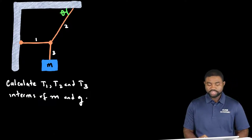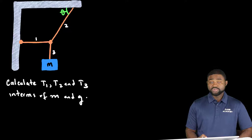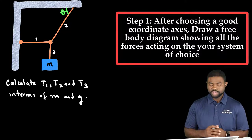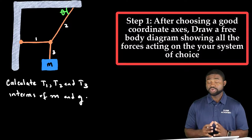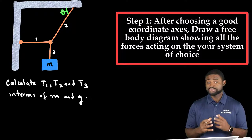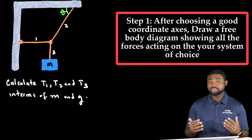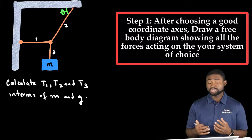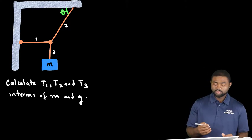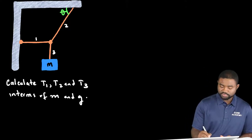The very first thing that you do whenever you're given a problem that involves forces is to draw a free body diagram. A free body diagram is simply a diagram that shows only the forces acting on a system. It doesn't show the forces asserted by the system. In this case we have two objects: we have a box and a knot.